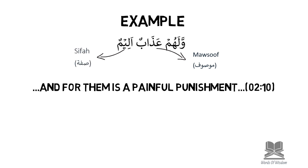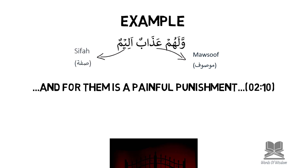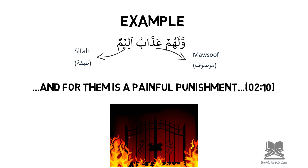'Wa lahum adhaabun alim': adhaabun has two dhamma and alimun has two dhamma — they match. Adhaabun has no alif lam and alimun has no alif lam — they match. Because we can see that it matches in all aspects, this is a confirmed example of musuf sifa — a word that is being described: and for them is a painful punishment.